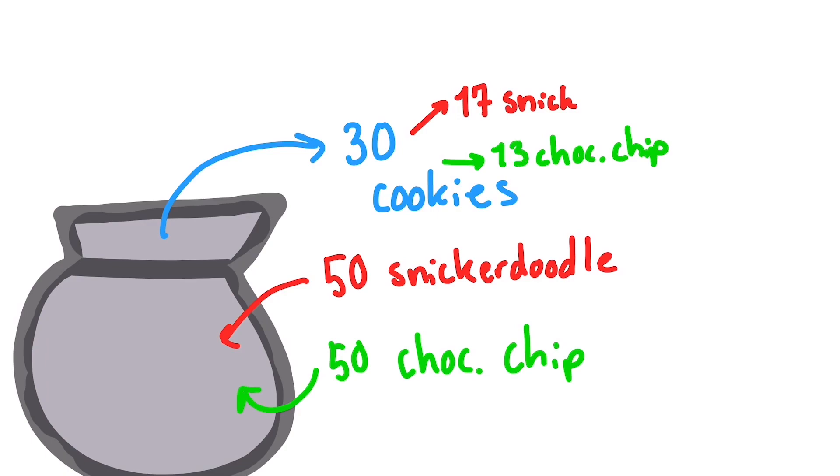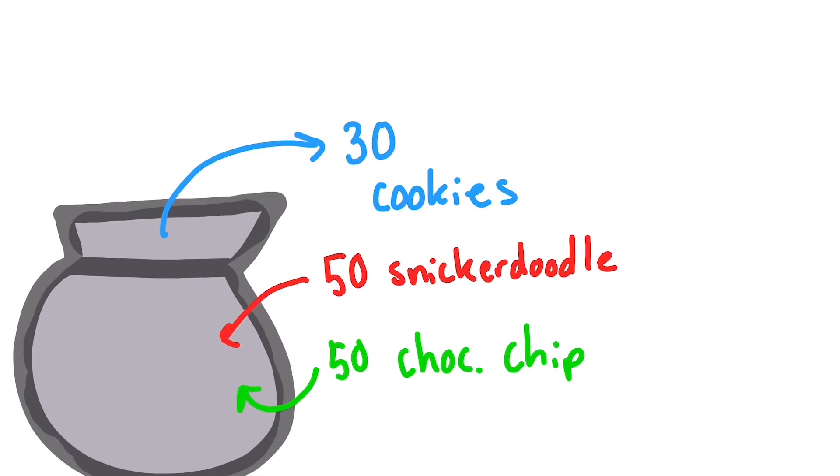While they would probably be a little frustrated, they wouldn't think too much of it. But what if they picked 30 cookies from the bag, and 29 were snickerdoodle and only 1 was chocolate chip?